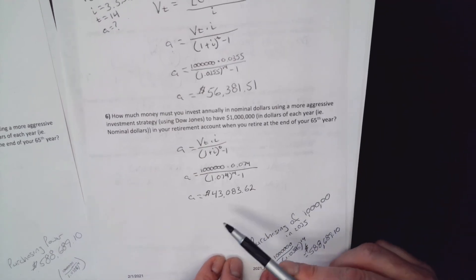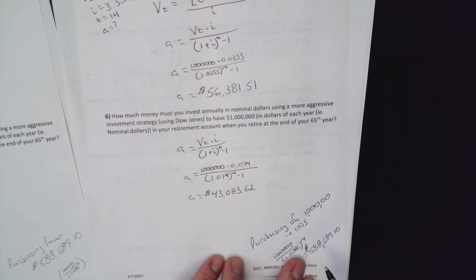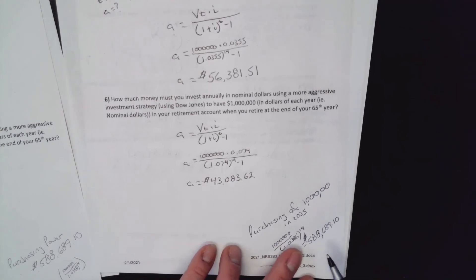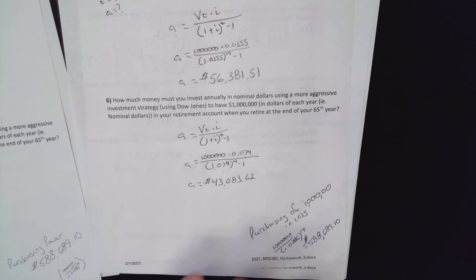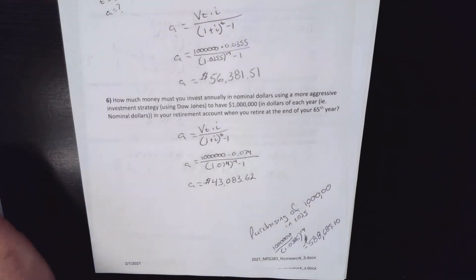So that million dollars in the nominal case would only buy the equivalent of $588,000 in today's dollars. The key takeaway: as long as you're consistent — if you're using nominal prices, use a nominal rate; if you're using real prices, use a real rate. I look forward to seeing you in class; hope this helps with the homework. Thanks, bye.